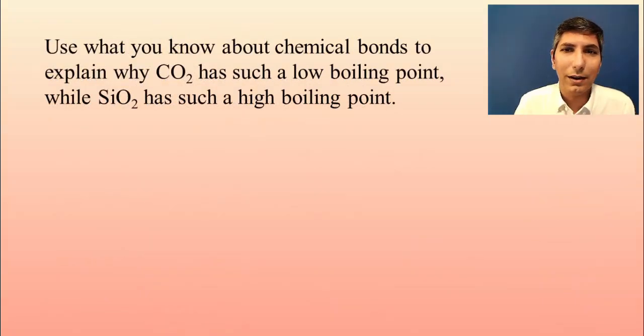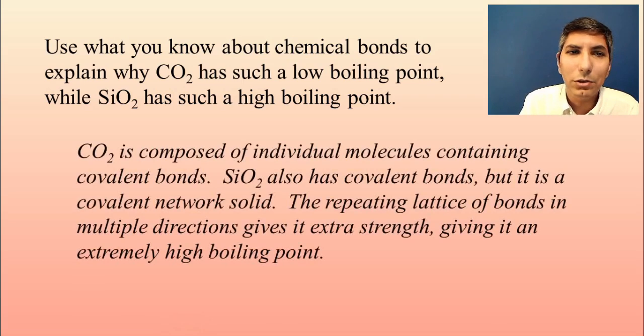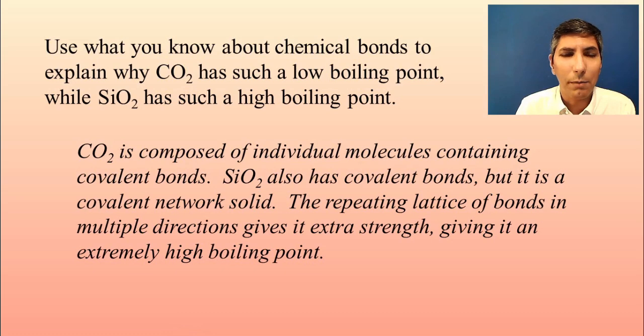Now, let's apply this knowledge. Let's use what we know about chemical bonds to explain why carbon dioxide has such a low boiling point, while silicon dioxide has such a high boiling point. And if you look at the periodic table, you might think, carbon and silicon are one is right above the other on the periodic table. You would expect them to be pretty similar chemically. But as it turns out, they are very different. Well, it has to do with the fact that carbon dioxide is composed of individual molecules containing covalent bonds. And so those forces that are keeping them together are relatively weak. They're basically just London dispersion forces. But silicon dioxide has covalent bonds, but we're talking about a covalent network solid. And so the repeating lattice of bonds in those multiple directions will give silicon dioxide extra strength. And that's why it has an extremely high boiling point.